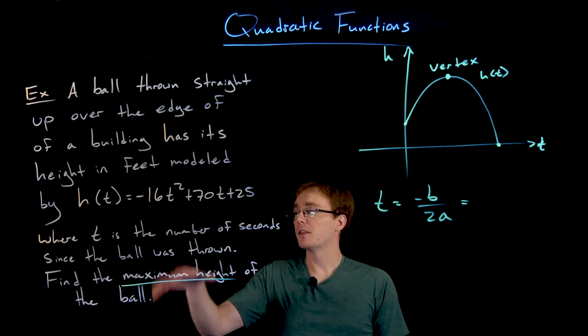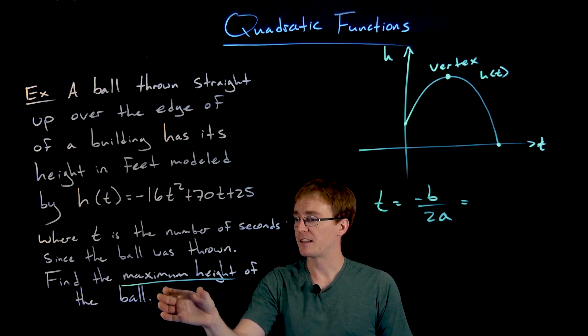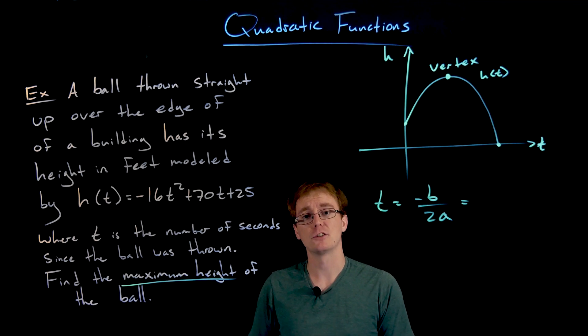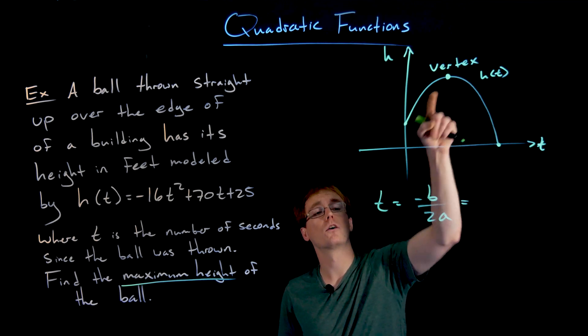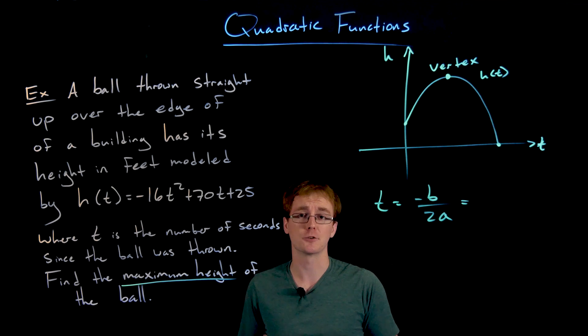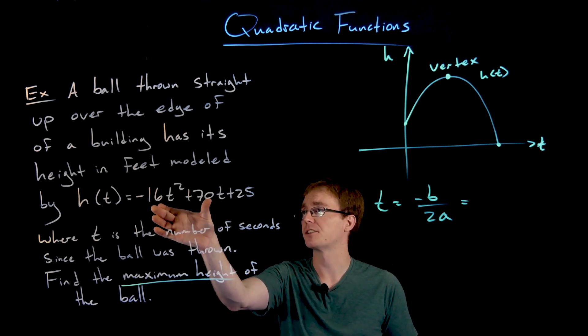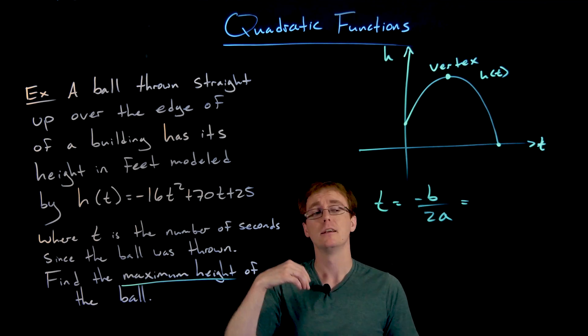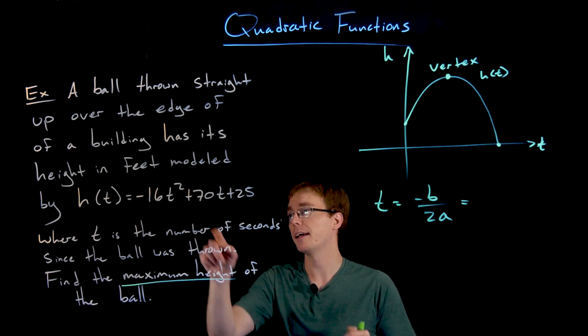We've read the problem statement, identified we're working with a quadratic function, and the maximum we're seeking corresponds to the vertex. Now we just need to find the vertex. That's really all this problem is asking us to do - find the vertex of this quadratic function. We know the t value for our vertex is given by -b/2a.